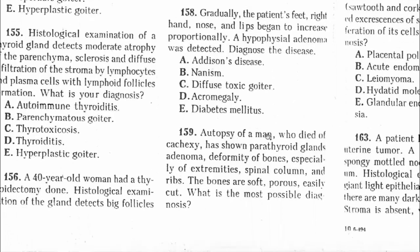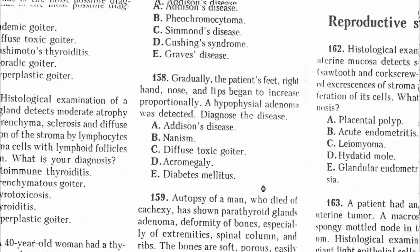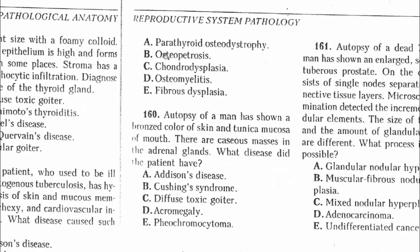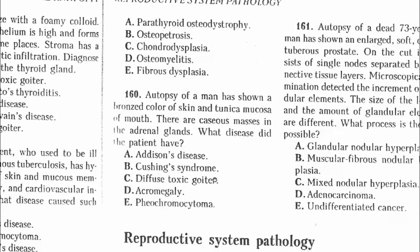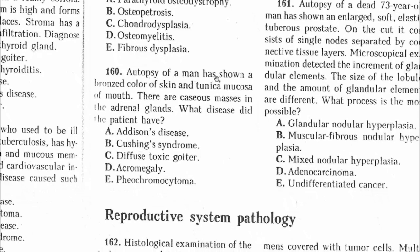Question 159: Autopsy of a man who died of cachexia has shown parathyroid gland adenoma, which is responsible for calcium production. Deformity of bones — especially of the extremities, spinal cord, and ribs — was noted; the bones are soft, porous, and easily cut. The most possible diagnosis is parathyroid osteodystrophy. The answer is A.